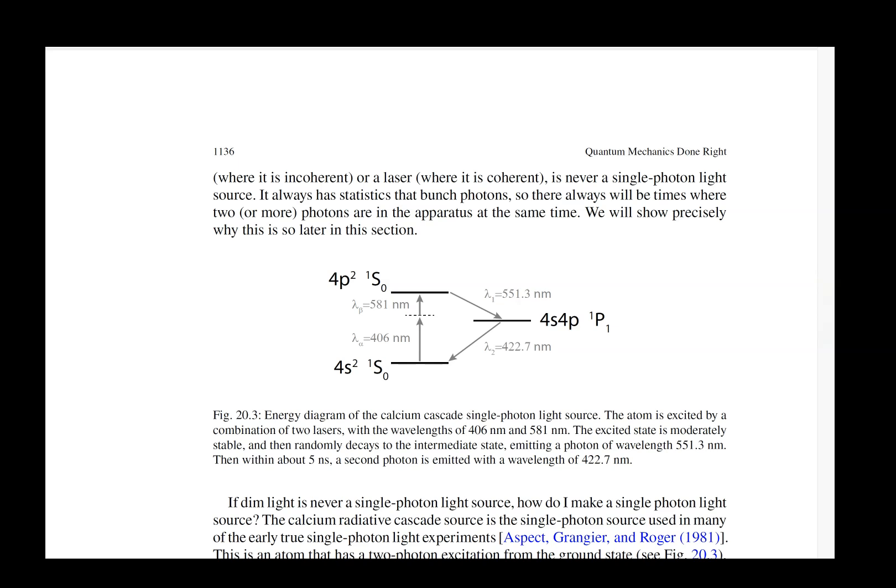And then it spontaneously decays to this intermediate state. The lifetime of that intermediate state is less than a nanosecond, where you have a second decay. So that first photon coming out heralds the fact that you're going to get a second photon within about a nanosecond.